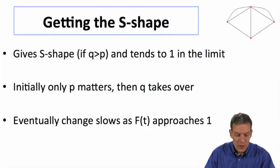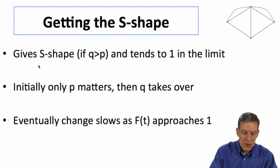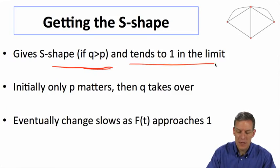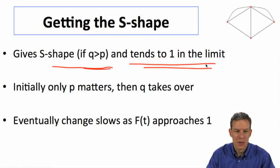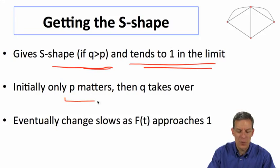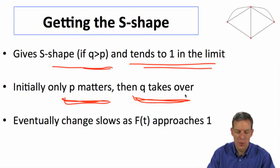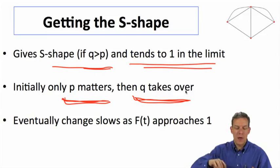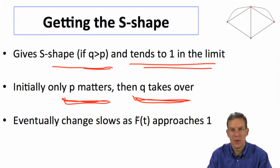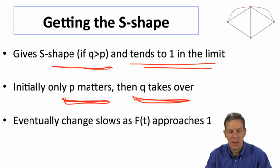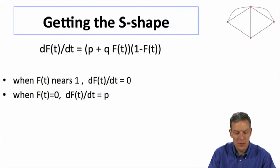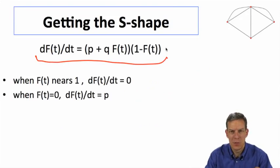So first thing is that it's going to end up giving an S-shape if q is bigger than p. It's going to tend to one in the limit as t becomes large. And basically what's going on in this model is initially the only way that people can adopt is it's mainly going to be through p and then eventually q is going to become the important parameter. And things will slow down as your fraction of people that have adopted eventually reaches one. So if we go back and look at exactly what this equation looks like, let's try and analyze this in a little more detail and try and understand why we get interesting dynamics out of this.